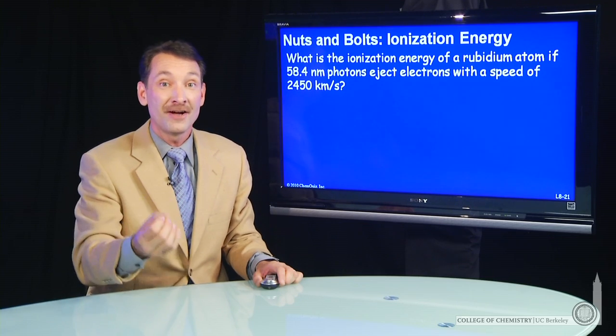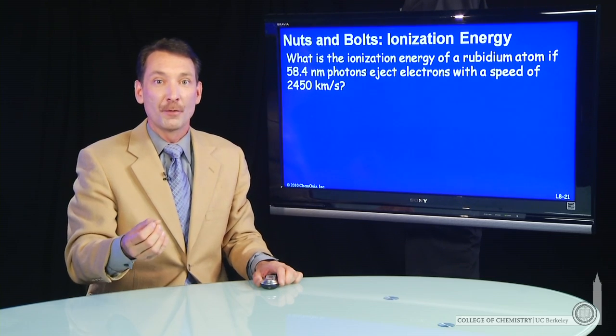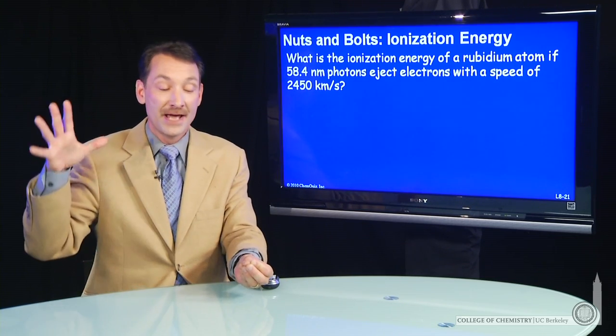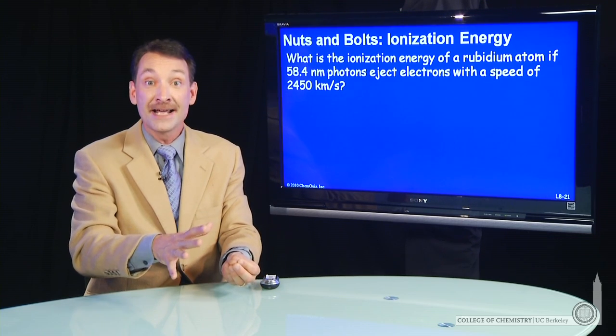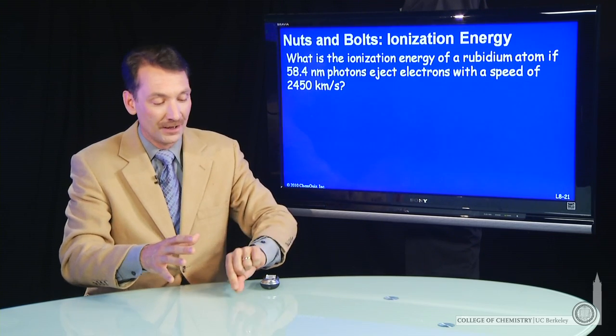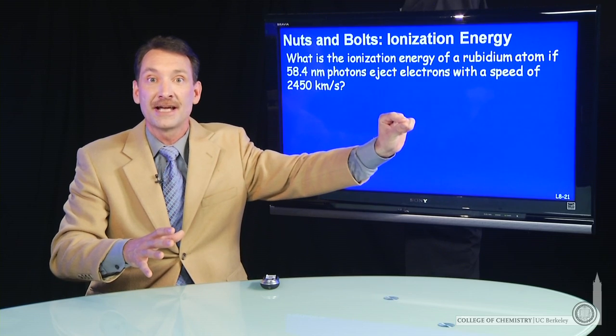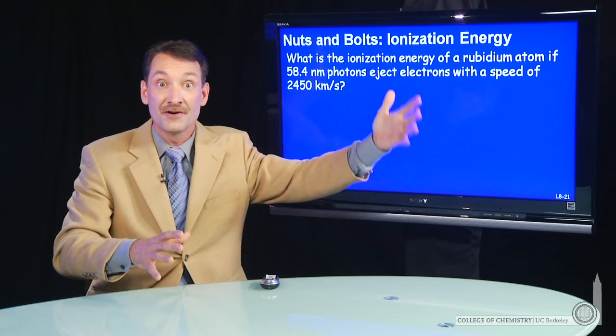Let's do a calculation where we calculate ionization energy. What we're going to do is take rubidium atoms and bathe them in ultraviolet light. That ultraviolet light will ionize the rubidium atoms. Electrons will leave with a certain kinetic energy, and we can measure that kinetic energy.